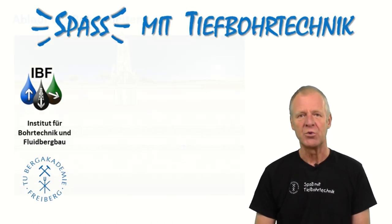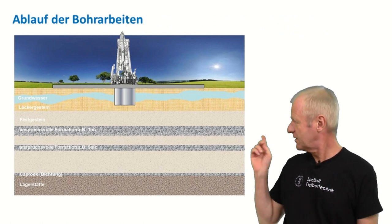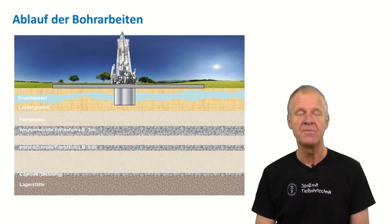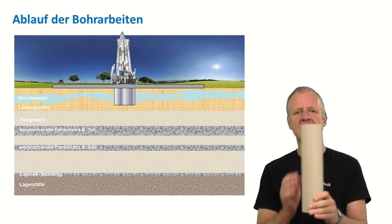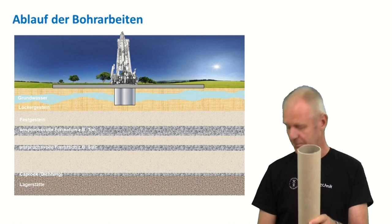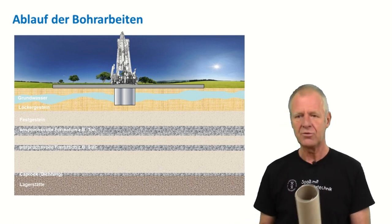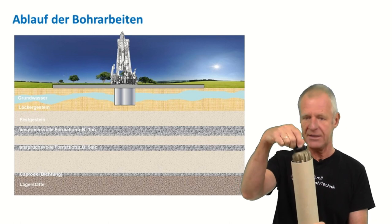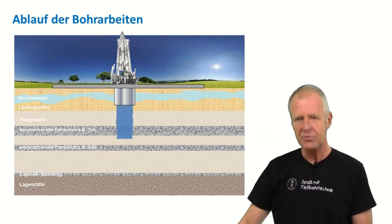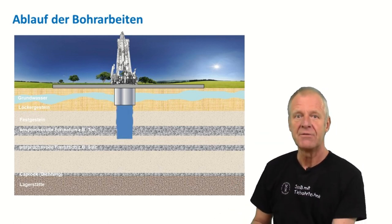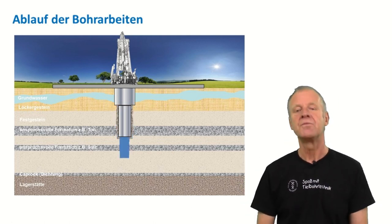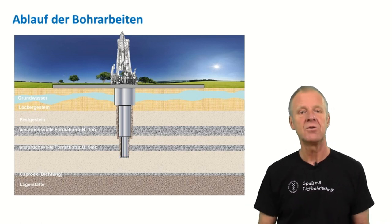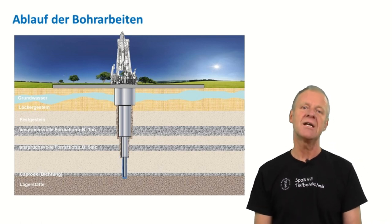You start drilling from the surface with a large diameter. As the section gets unstable or shows any operational difficulties, the drill string is stripped out and a steel tube — a casing — is cemented firmly in place. Then you run into the borehole with a drill string and a smaller bit that fits through the first casing. The next section is drilled until the second casing is set and cemented in place. Then the third section is drilled again, cased and cemented, and so on and so forth until you arrive in the reservoir.